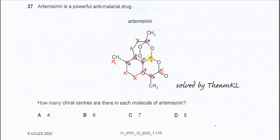Another one here. This one has one, two, three, and another hydrogen. So we have a total of one, two, three, four, five, six, seven. So in this molecule, it has seven chirocenters. So the answer is C. That's all, thank you.